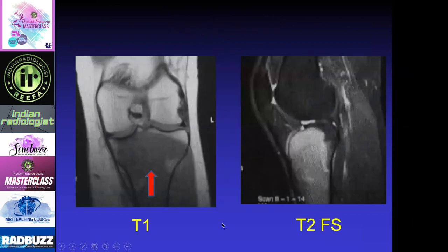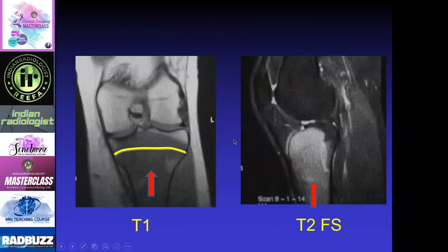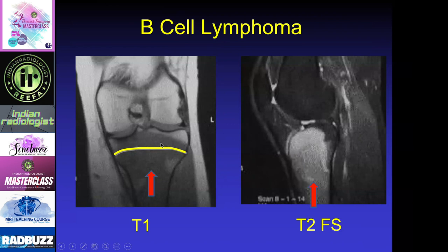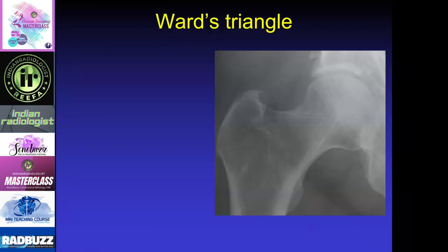As opposed to this case, where we can see there's abnormal signal within the proximal tibia that is just as dark as skeletal muscle — so already we want to be worried about this process. It's very bright on the T2-weighted images, and this process crossed into the physeal scar, which is very concerning. This turned out to be a case of B cell lymphoma.